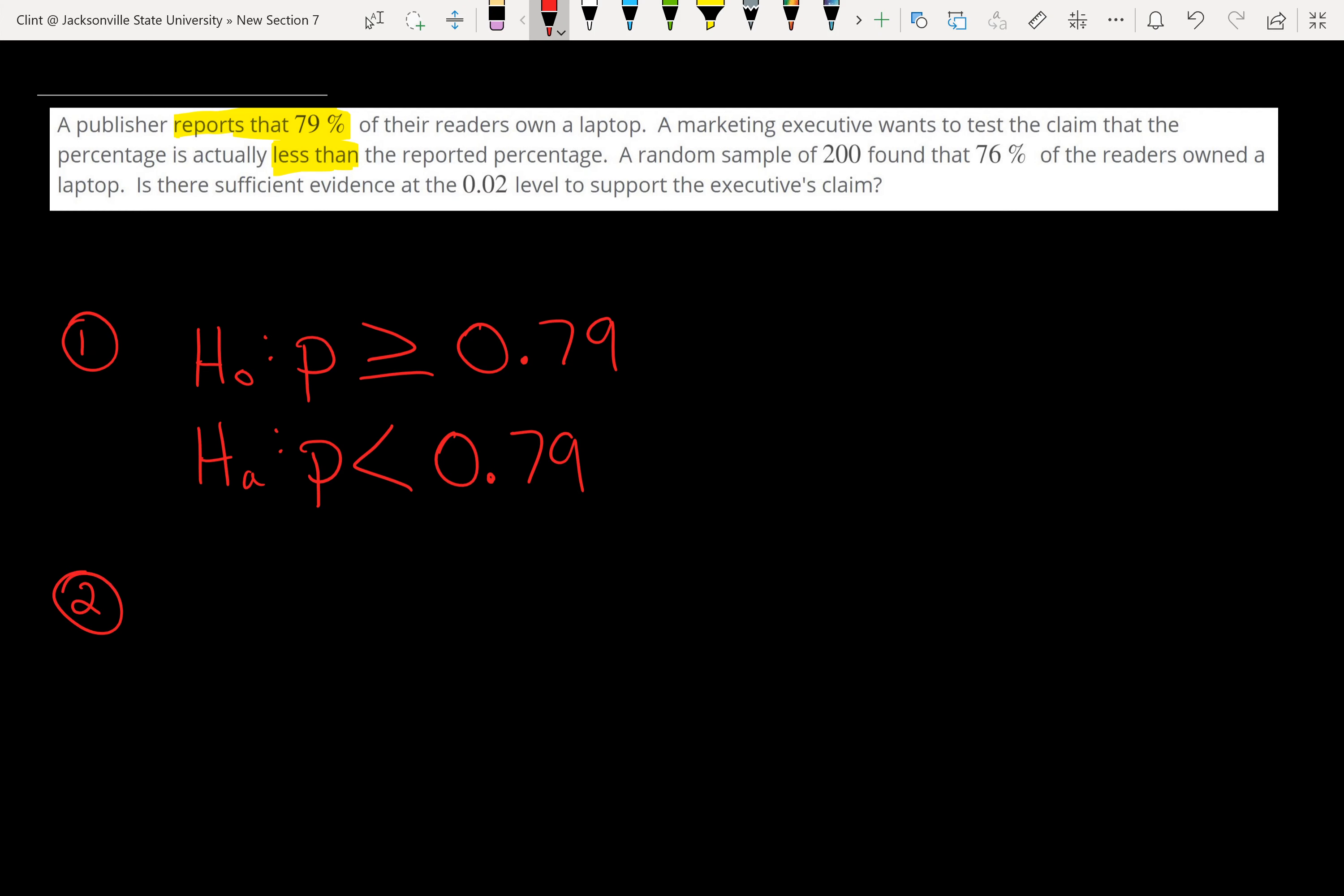Then we want to calculate our test statistic. Since we're dealing with proportions, we're going to use z, and our formula for a z test statistic with proportions is p-hat minus p divided by the square root of p times (1 minus p) divided by n. Everything down there in the bottom is in the square root.